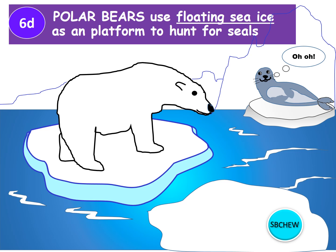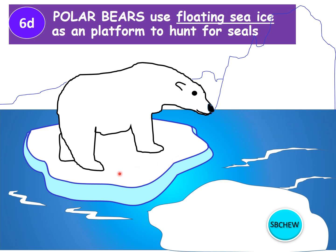In the Arctic regions, one organism that needs floating sea ice very desperately is the polar bear. Polar bears use the floating sea ice as platforms to hunt for seals, which come to rest on the ice. With climate warming, the sea ice is becoming less and less, and polar bears are starving to death and are on the brink of extinction.